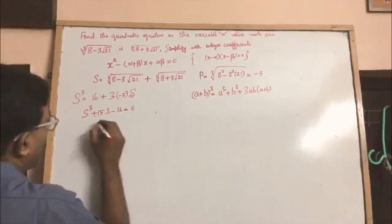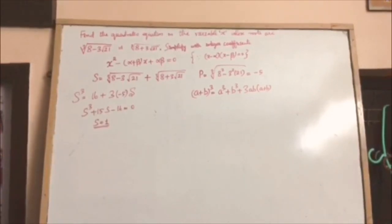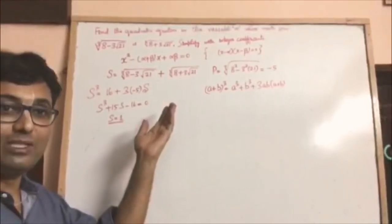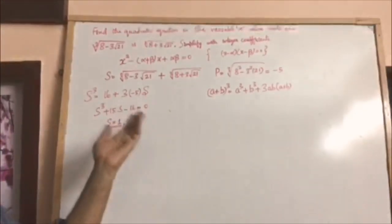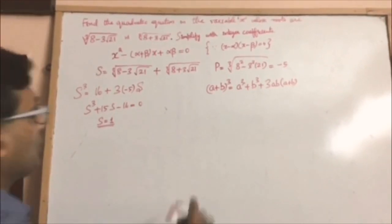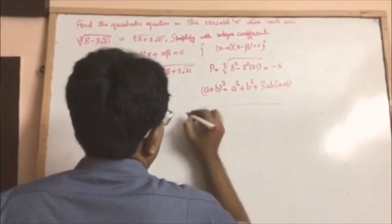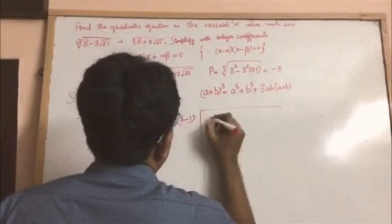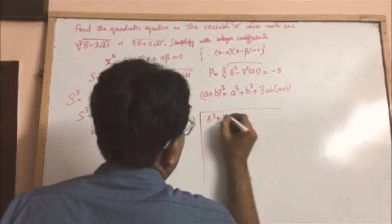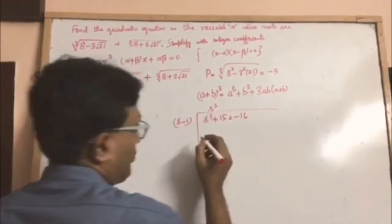Therefore s equals 1 is a straightforward solution. We need to determine whether there are other possible real values of s that also satisfy this equation. So we will perform long division: dividing s cubed plus 15s minus 16 by (s minus 1).